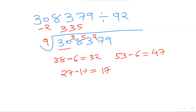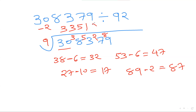With 17: 9×1=9 and remainder is 8, giving 89. Apply adjustment: 1×(−2)=−2, so 89−2=87. That 87 is your remainder. So the answer to 308379 ÷ 92 is 3351 remainder 87. Cool, isn't it? You can handle big divisions quite easily with this method.